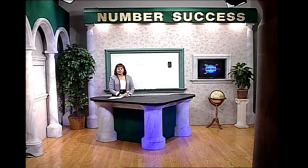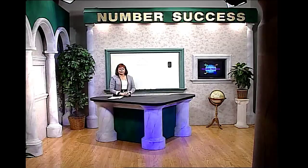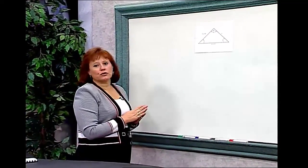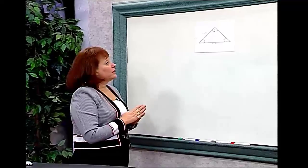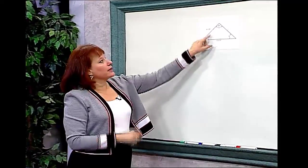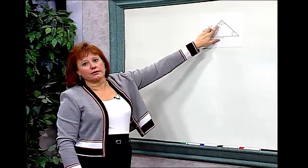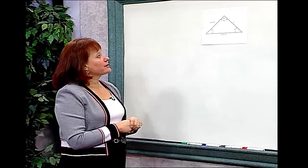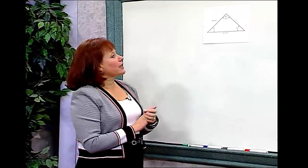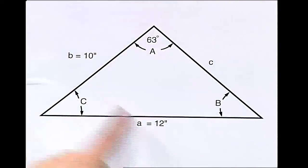Oblique triangles — two sides and the angle opposite a known side. Looking at the example on the board, we have an acute triangle with angles A, B, and C. We know one angle: 63 degrees. We also know two of the sides: A is 12 and B is 10.